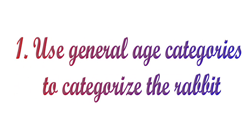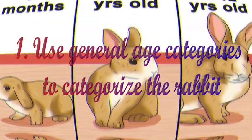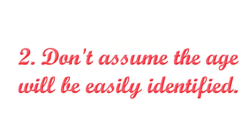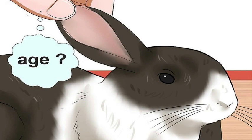Part 1: Figuring out the general age of a rabbit. Use general age categories to categorize the rabbit — this will give you a good way of starting your assessment. A young rabbit is up to 9 months of age. An adult rabbit is approximately 9 months to 4 to 5 years of age. An elderly rabbit is 4 to 5 years and upwards; some rabbits live to be 10 to 12 years of age.